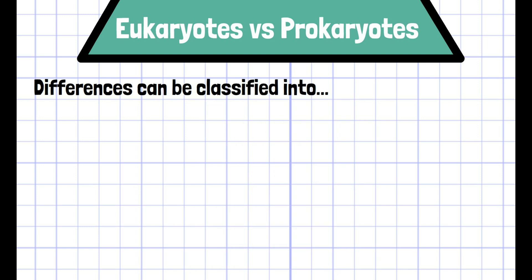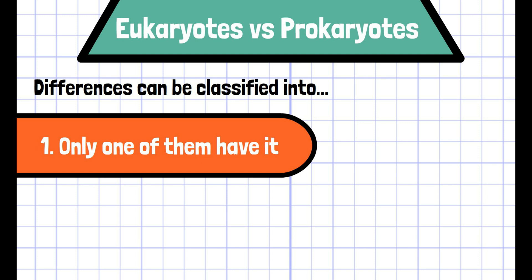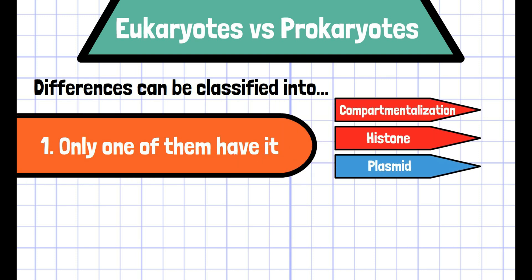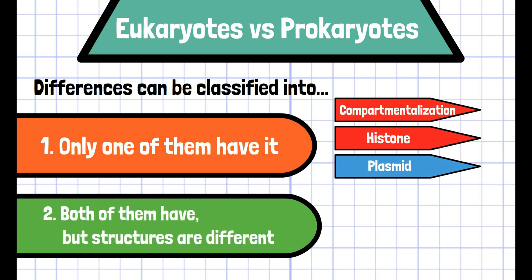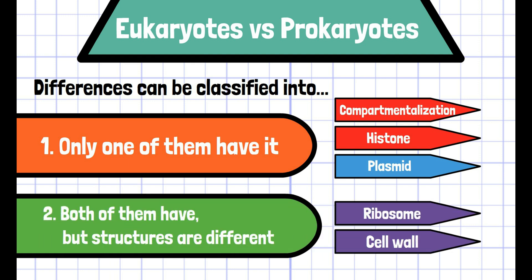Differences can be classified into two cases. The first case is either one of them has it, such as compartmentalization and histones in eukaryotes and plasmids in prokaryotes. Or both of them have it, but the composition is different, such as ribosomes and cell walls.